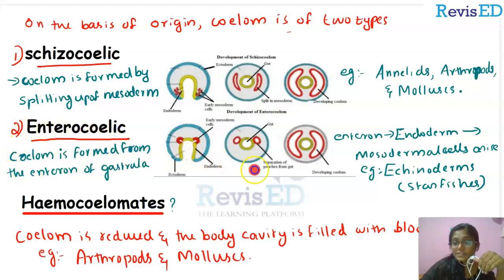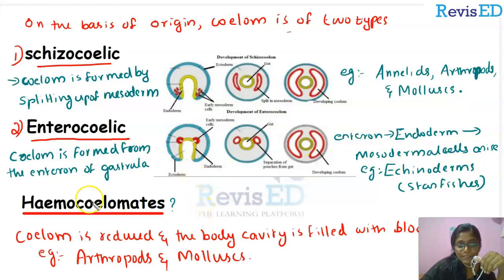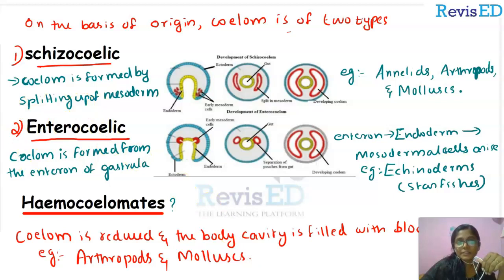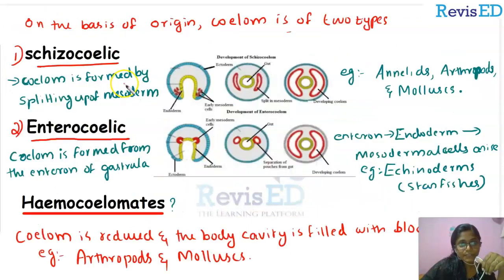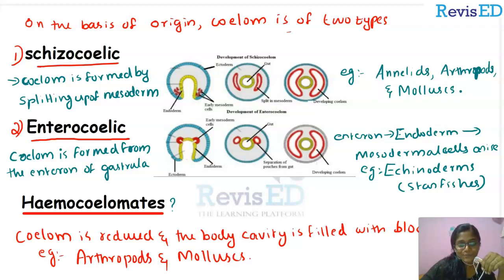So, on the basis of coelom we have divided animals into schizocoelic and enterocoelic, discussed the formation of coelom in both types, and also covered what haemocoelomates are. This topic is related to coelom and should be studied alongside the previous class. Go through the video once more for a clear understanding. That's it for today — stay safe and be revised.